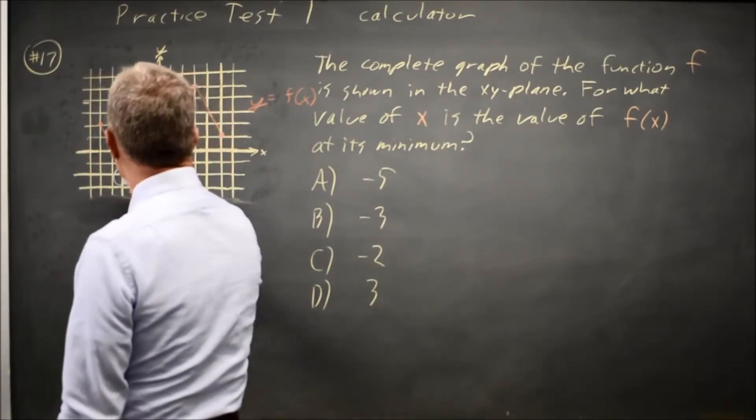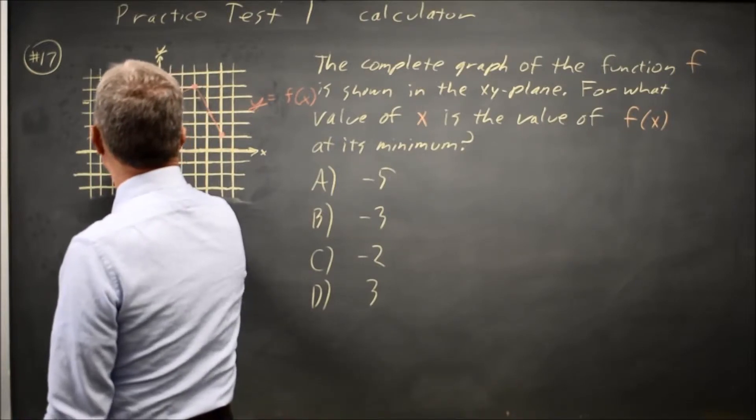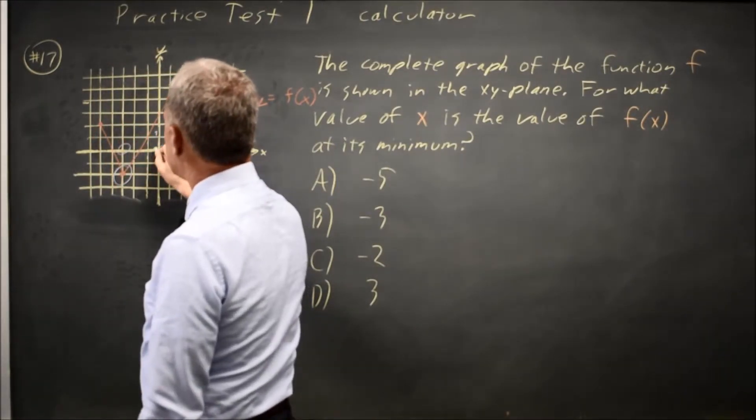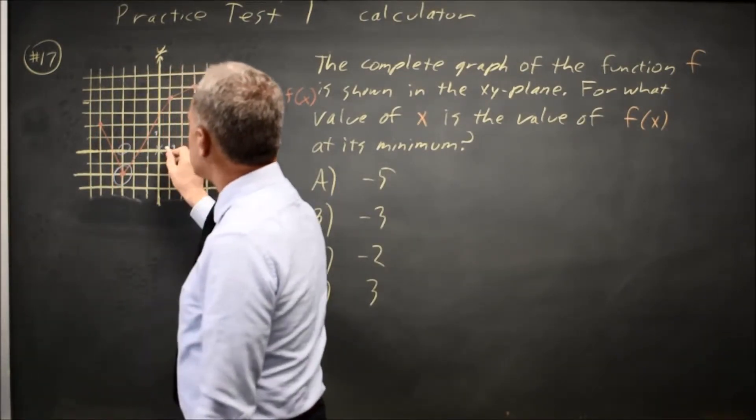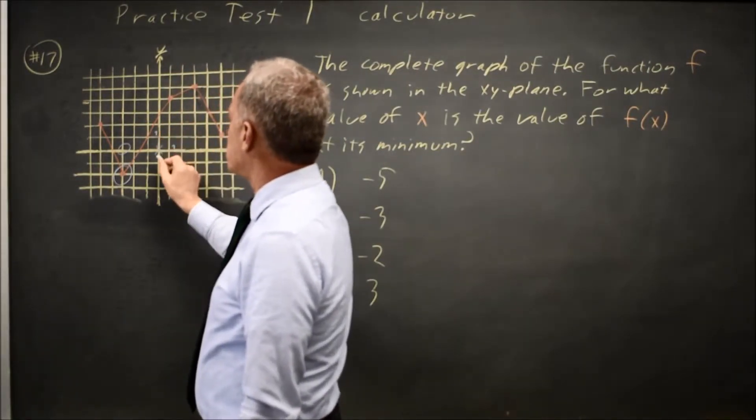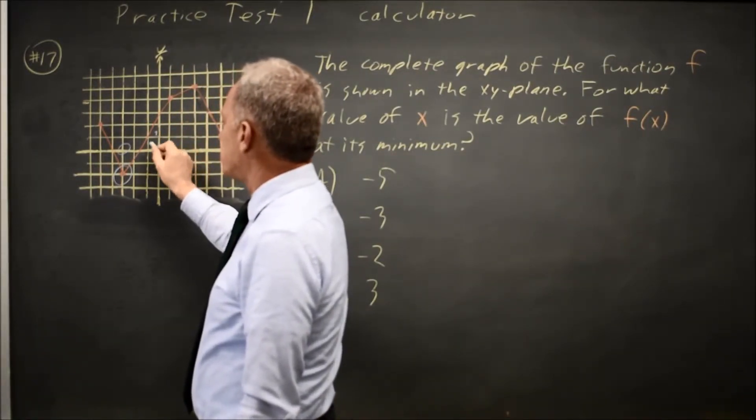And they want the x value here. Since this is the origin and they show that the vertical scale is 1 for each square and the horizontal scale is 1 for each square.